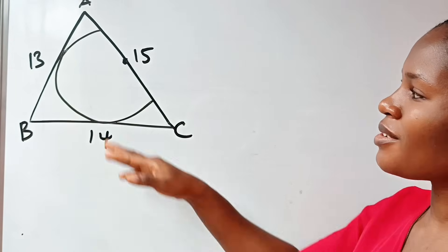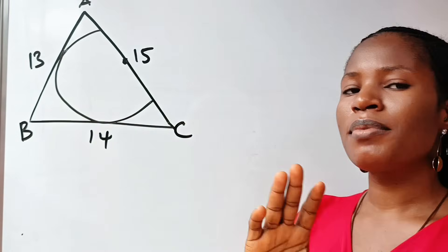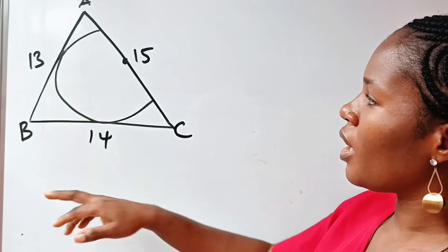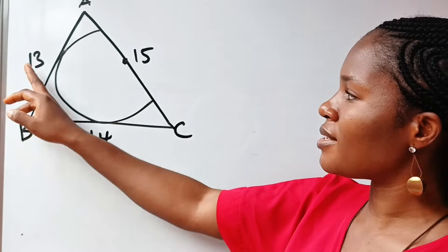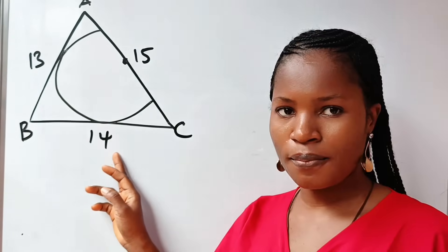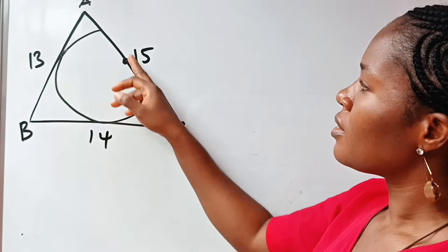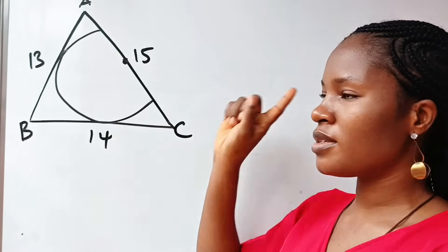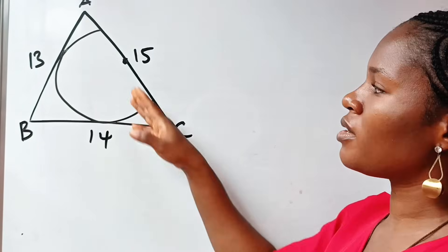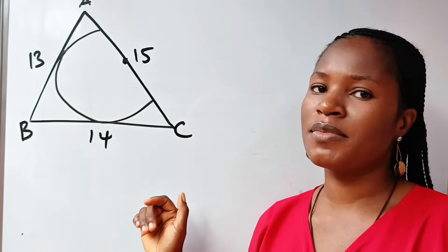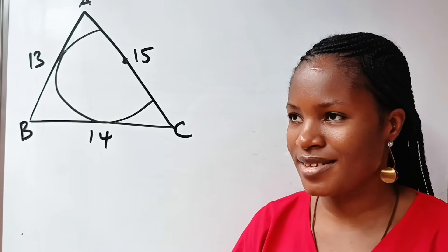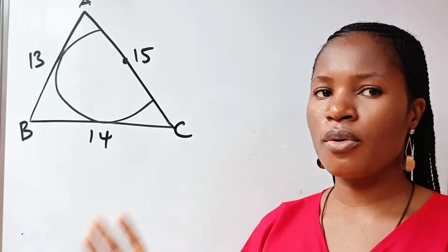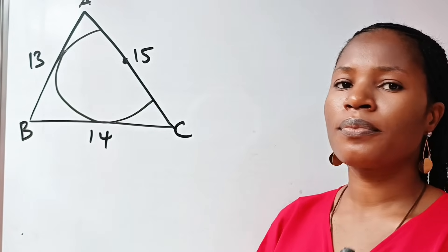The question says we should find the radius of this semicircle. Please pardon my drawing — this is meant to be a triangle, not drawn to scale, of sides 13, 15, and 14. And this is a semicircle, so assuming this is a semicircle, we are asked to find its radius.